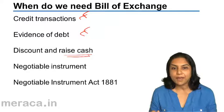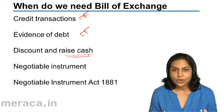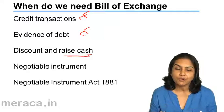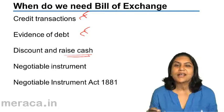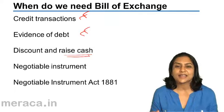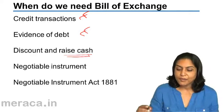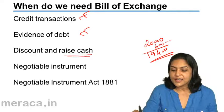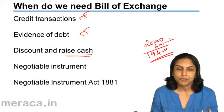X can take this bill to the bank and tell the bankers that he needs money now, and the bank can collect the money after three months. This is the process of discounting the bill. The bank will pay X an amount of ₹20,000 less a discount. If the bank charges a discount of 12% per annum, an amount of ₹600 would be deducted, and ₹19,400 would be handed over to X. This ₹600 represents the discount or interest charges for receiving the money upfront, three months before maturity.